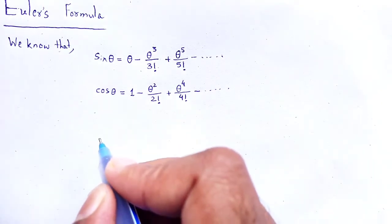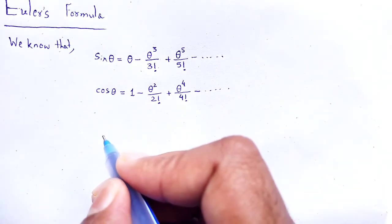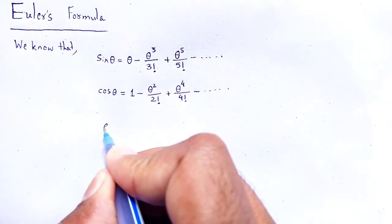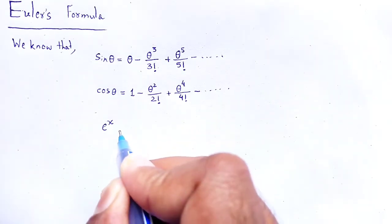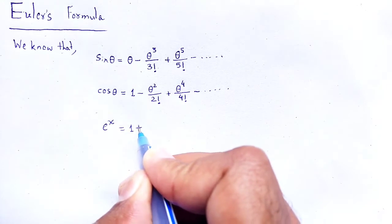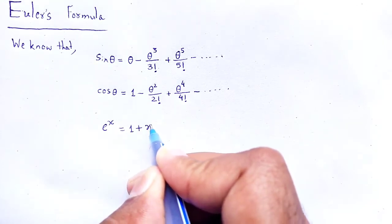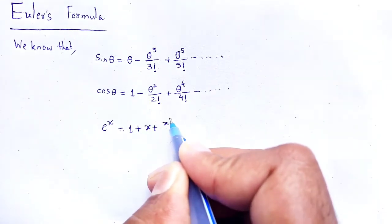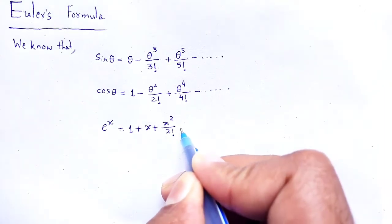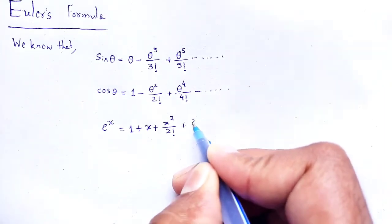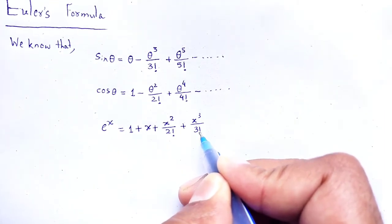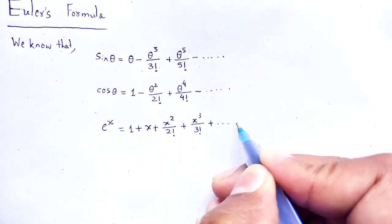The expansion of the exponential function: e to the power x is expanded as 1 plus x plus x squared divided by 2 factorial plus x cubed divided by 3 factorial plus dot dot dot.